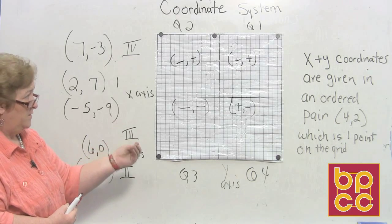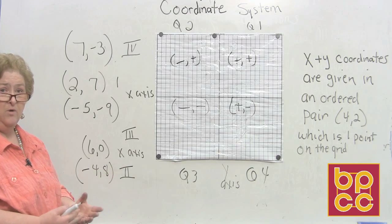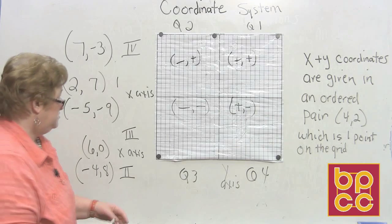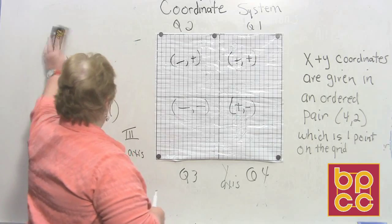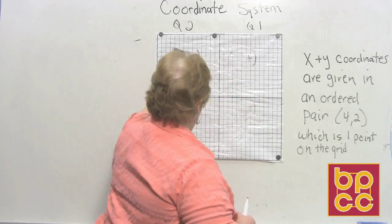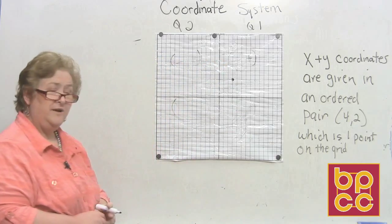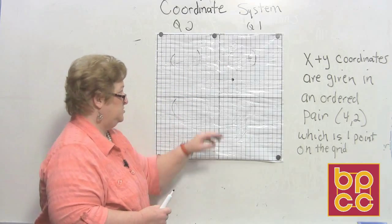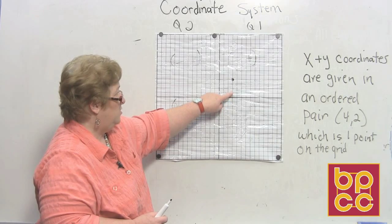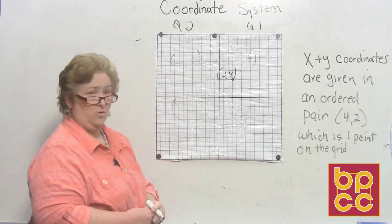On your quiz, you'll either see a point on the coordinate grid and have to identify its ordered pair, or I'll show you a location and you tell me which quadrant it's in. For example, a point plotted here: from the origin, move right 3 on the x, then up 4 — so this location is (3, 4).